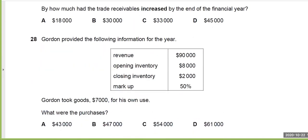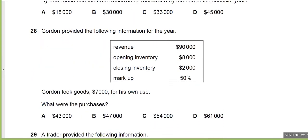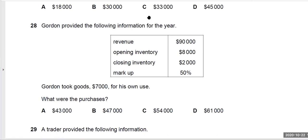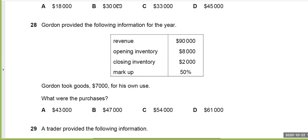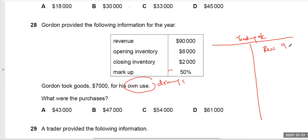Revenue, opening inventory, closing inventory, and a markup. Gordon took goods, 7,000 for his own use. Okay people, let's go. Let's start. What were the purchases? What's for own use? This is drawings. What about the purchases? Now this type of question, I like doing this question like this. I know the newer textbooks have this long way of writing statement by statement, which I find a little bit tedious. I'm fond of teaching you guys the old-fashioned way, pure double entry.